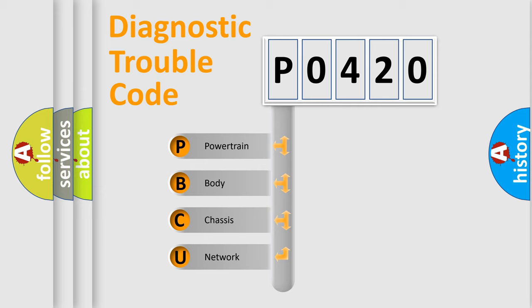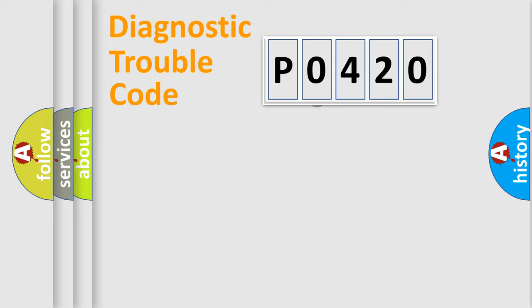We divide the electric system of automobile into four basic units: Powertrain, Body, Chassis, and Network. This distribution is defined in the first character code.